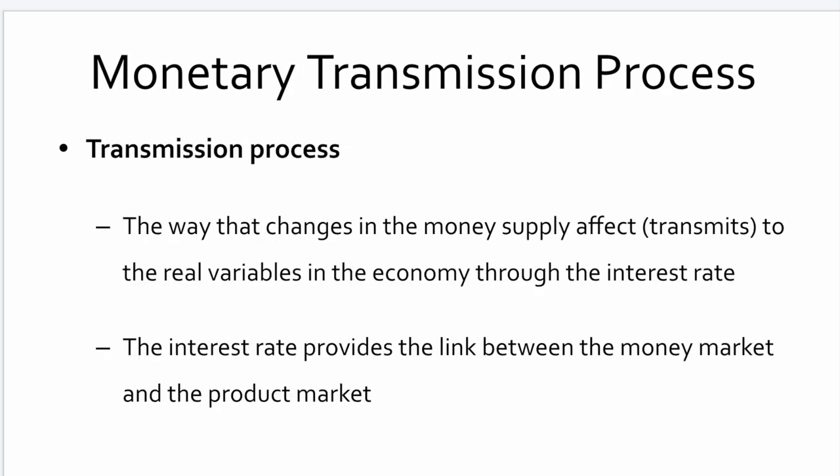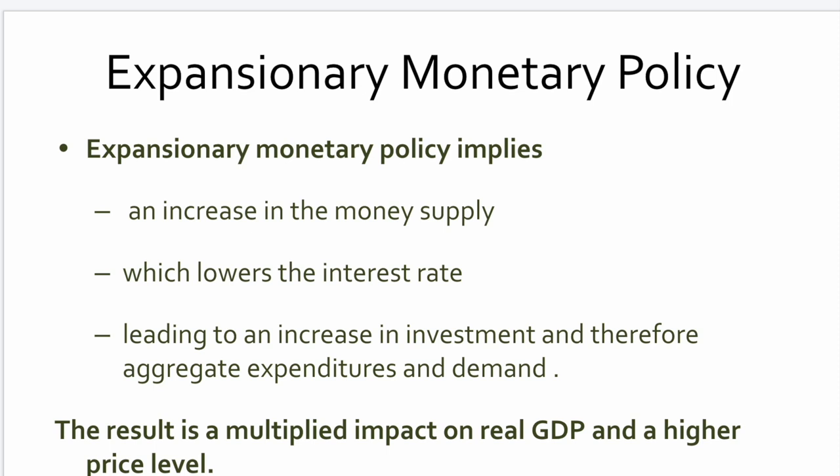What impact do expansionary or contractionary changes have — how do they flow into the economy? This is what we call the monetary transmission process: the way a change in interest rates affects real variables in the economy through the interest rate. The interest rate provides a link between the money market and the actual product market. Expansionary monetary policy lowers interest rates, increases the money supply, and leads to an increase in investment. Aggregate expenditures go up and drive demand, resulting in a multiplied effect on real GDP and a higher price level.